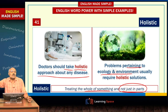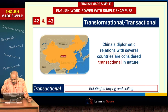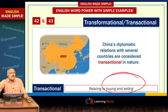The next words are 'transformational' and 'transactional' — you find these quite often in newspapers with regard to relationships between two countries. Let me first explain 'transactional': transactional means relating to buying and selling. If I am having a relation with your country, then what am I getting in return, which goods you are purchasing, which investments you are offering — that perspective is transactional.